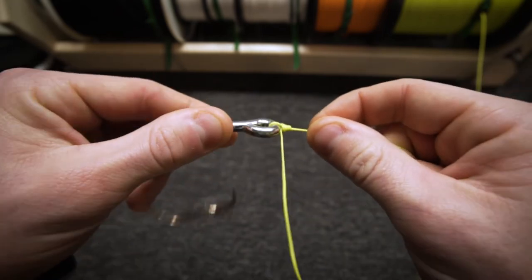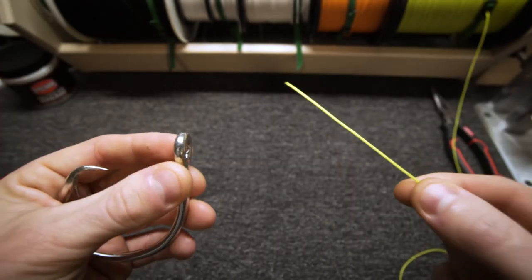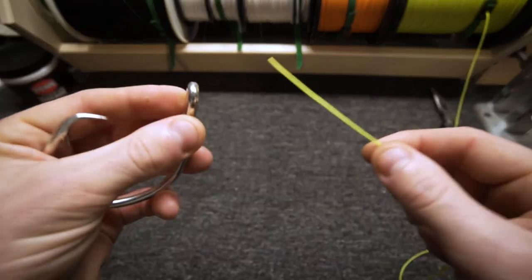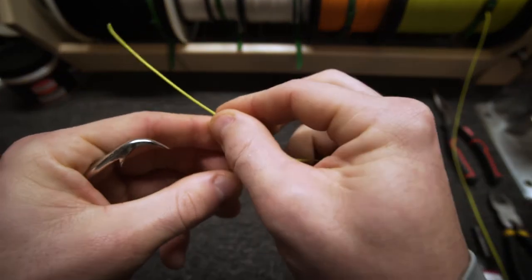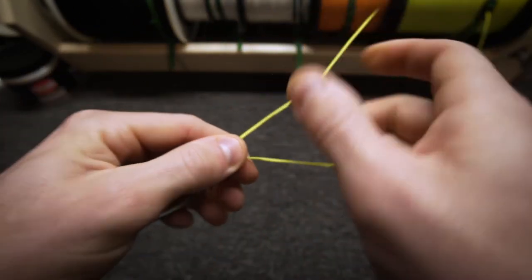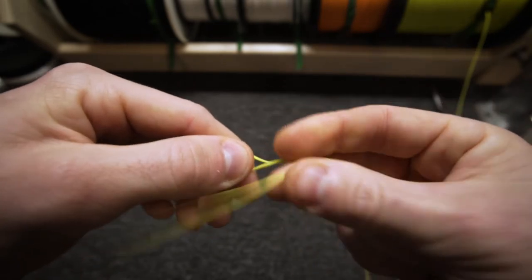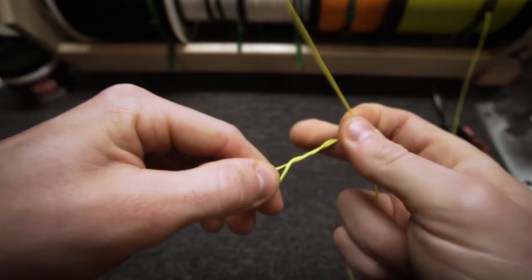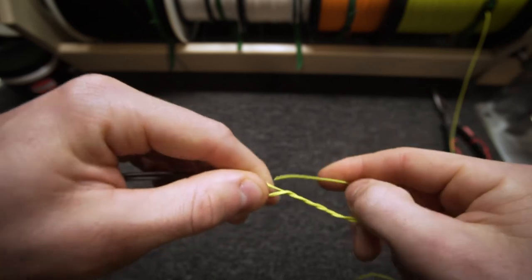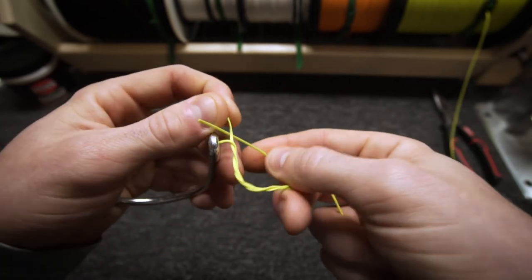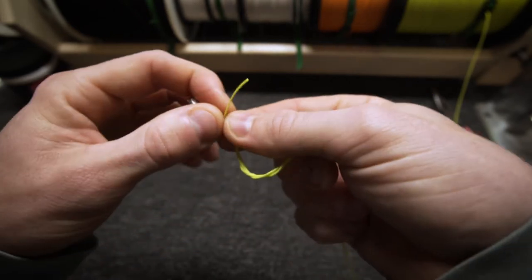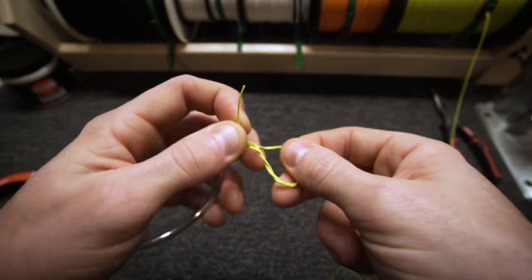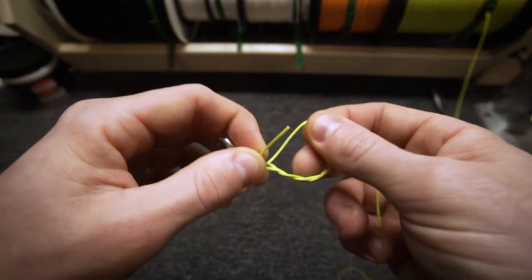Now the improved clinch knot is the exact same knot. You're going to go through whatever you're connecting, you're going to twist the tag around the main line, then you're going to go back through the eye. That would be your clinch knot if you pulled this tag.